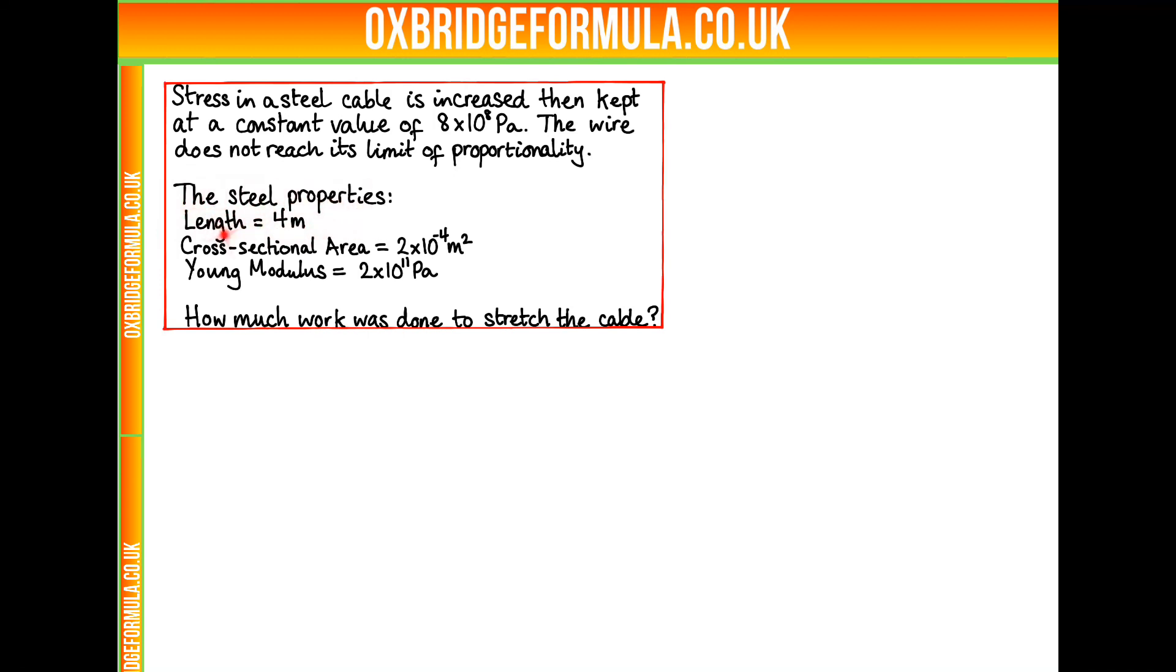Steel properties are: the length is 4 metres, the cross-sectional area is 2 times 10 to the minus 4 metres squared, and its Young modulus is 2 times 10 to the 11 Pascal. How much work was done to stretch the cable?